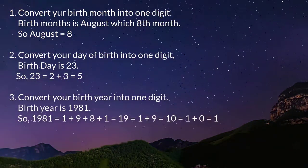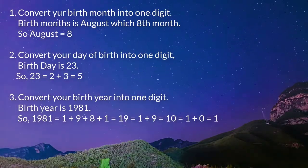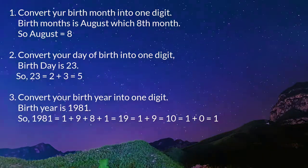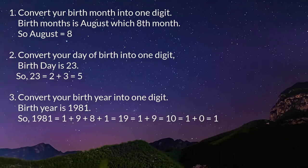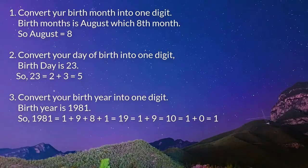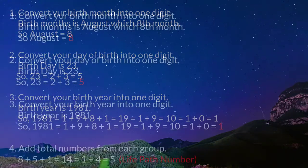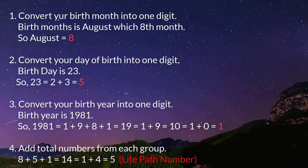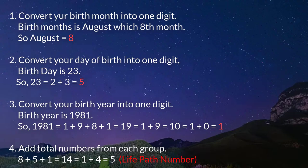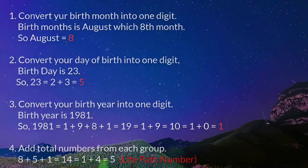Step 3: Convert your birth year into one digit. Birth year is 1981. So 1981 equals 1 plus 9 plus 8 plus 1 equals 19, equals 1 plus 9 equals 10, equals 1 plus 0 equals 1. Step 4: Add total numbers from each group. 8 plus 5 plus 1 equals 14, equals 1 plus 4 equals 5. So 5 is the life path number.